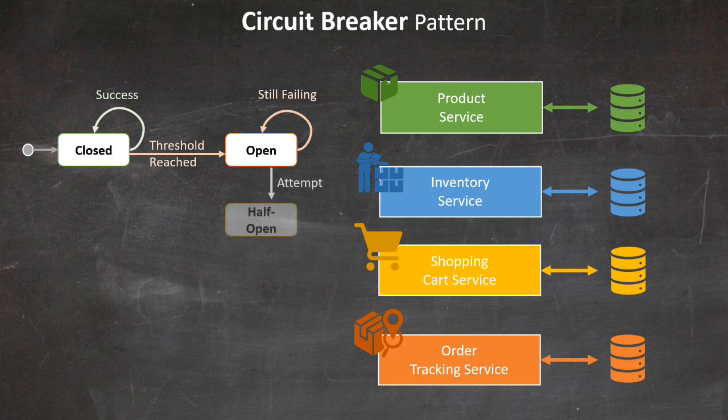Finally, after an even longer timeout using some type of jitter randomization logic, the circuit breaker is reset to the half-open state, allowing the inventory service to try the call again. This time we're lucky — the product service responds successfully, and we can close the circuit breaker. However, if the call fails again, we go back to the open state to give more time to the product service to recover from its failure.